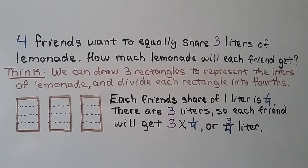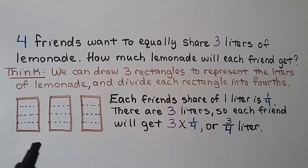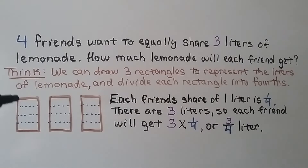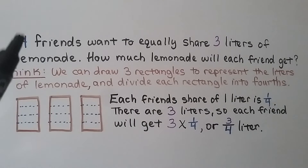4 friends want to equally share 3 liters of lemonade. How much lemonade will each friend get? We can draw 3 rectangles to represent the liters of lemonade and divide each rectangle into 4ths because there are 4 friends. Each friend gets 1 fourth from each liter. Because there are 3 liters, each friend will get 3 times 1 fourth, or 3 fourths of a liter.